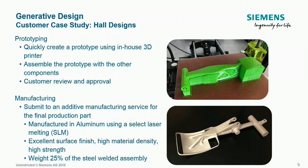Thank you, John. To summarize the results of the Hall Designs generative design case study: they had a prototype created in plastic using their in-house 3D printer. The prototype was used to assemble the part alongside other components to prove out the fit and function and for customer review and approval. The final production part was then created by submitting the design to an external additive manufacturing specialist. They printed the component in aluminum using a selective metal sintering technique. The final component was actually 25% the weight of the original, with an excellent surface finish, and the high-density sintering process also results in a very strong part.